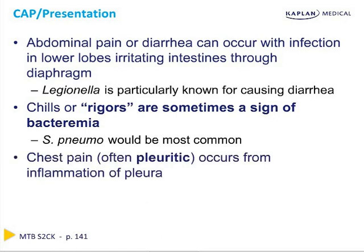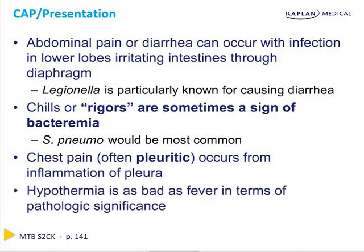Chest pain, usually pleuritic in nature, can also occur from the inflammation of the pleura. And hypothermia, while not as common, is just as bad as fever in terms of pathologic and prognostic significance.